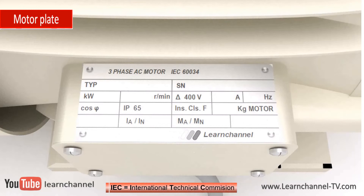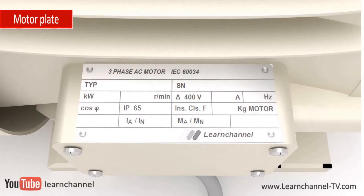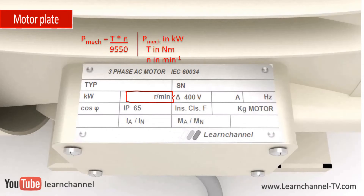In the next section, we discuss the basic information given by the nameplate. The International Electrotechnical Commission established standards for the information provided on the nameplate. The motor's rated mechanical output power is given in kilowatts. Motor rated speed, or full-load RPM, is the approximate RPM at which the rotor is rotating when the motor is operating under full load. With the information of the mechanical power and the rated speed, you can calculate the rated torque by this equation.